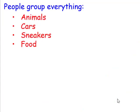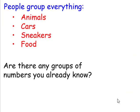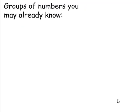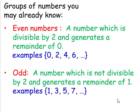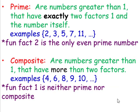People group everything: animals, cars, sneakers, food. Are there any groups of numbers you already know? Groups of numbers you may already know, even numbers or odd numbers, also prime numbers or composite numbers.